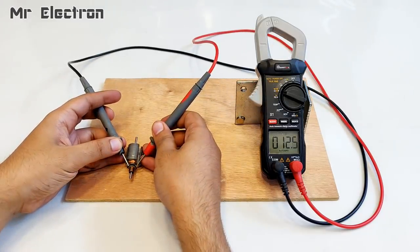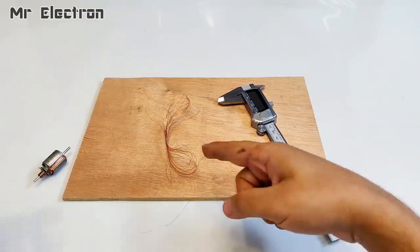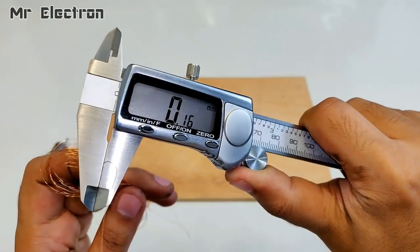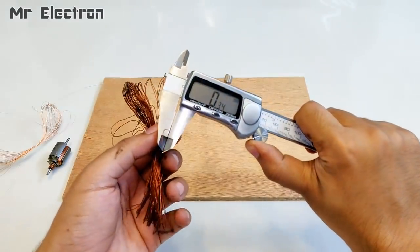As you can see, the resistance is 12 ohms. Let's measure the thickness of the wires wound on this armature. It is 0.16, and here I'm going to use this one. It is 0.34.